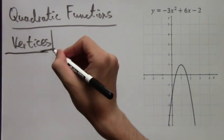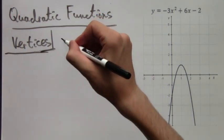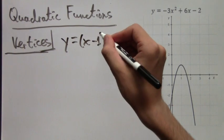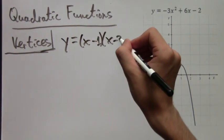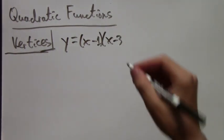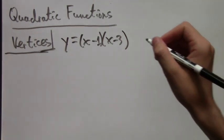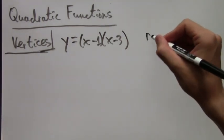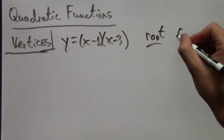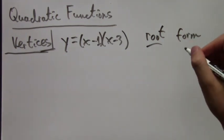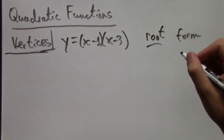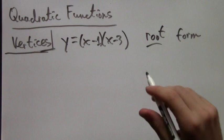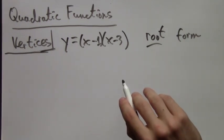So, let's take the function y equals (x minus 1) times (x minus 3). We're going to get rid of that graph. We don't need it anymore. So, this is obviously in root form. We have x minus something times x minus something else. And we're not adding anything or anything else. We just have x and something times x and something else.